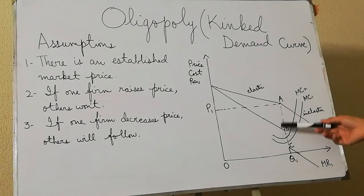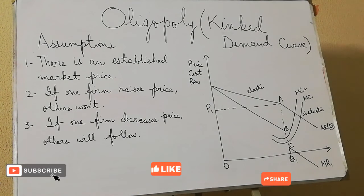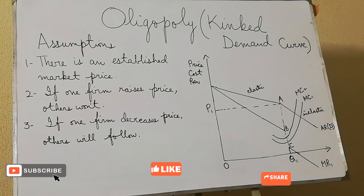Secondly, the gap in the marginal revenue curve may reduce, and we might see MC cutting MR outside the discontinuous part. Thirdly, if due to higher costs of production one firm increases its price, there is a possibility that other firms would also follow, as they face the same higher production costs. I hope you understand this kinked demand curve model of oligopoly. Thank you for watching — happy learning.